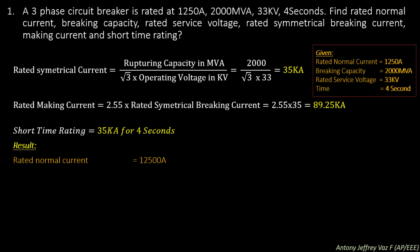The rated normal current is given in the question itself which is 1250 A. The braking capacity is the power rating of the circuit breaker, which is 2000 MVA. The rated service voltage is present in the CT ratings, so here we have 33 kV.